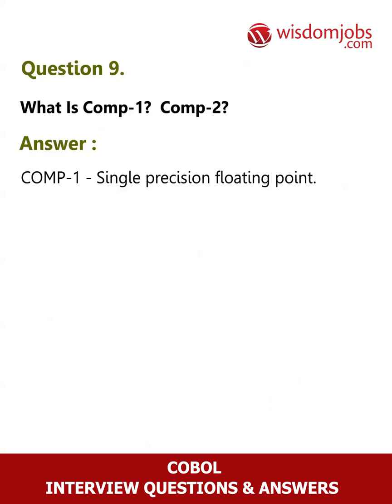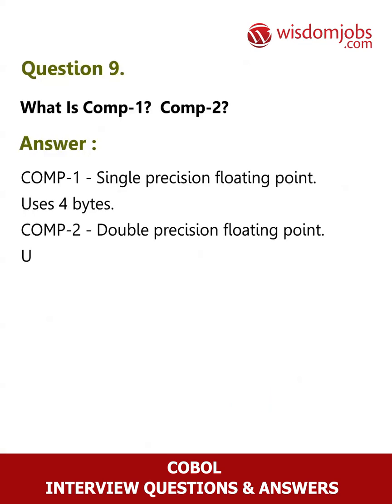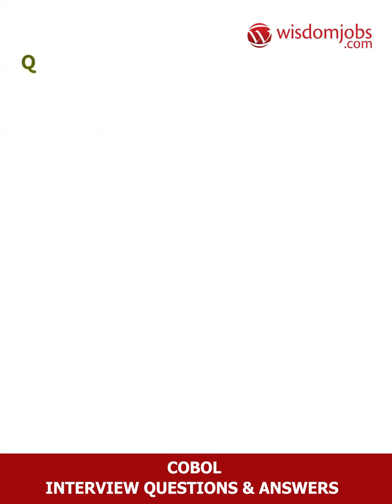Question 9: What is COMP-1 and COMP-2? Answer: COMP-1 is single precision floating point and uses 4 bytes. COMP-2 is double precision floating point and uses 8 bytes.